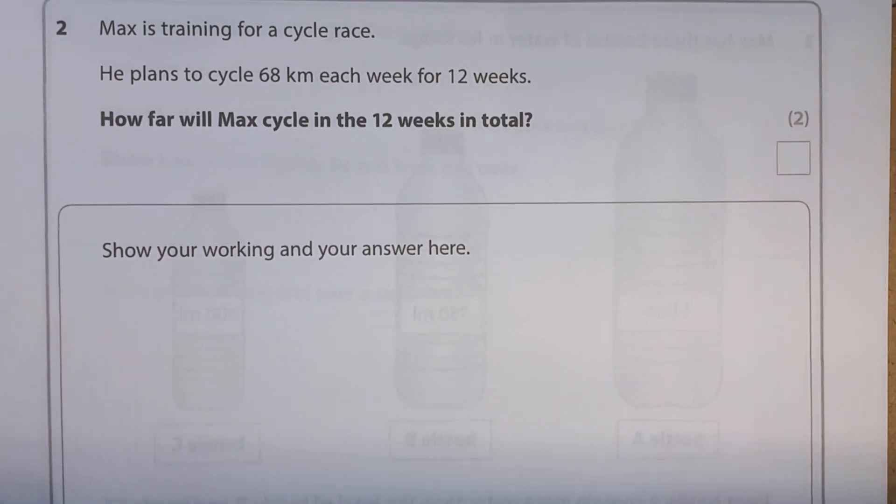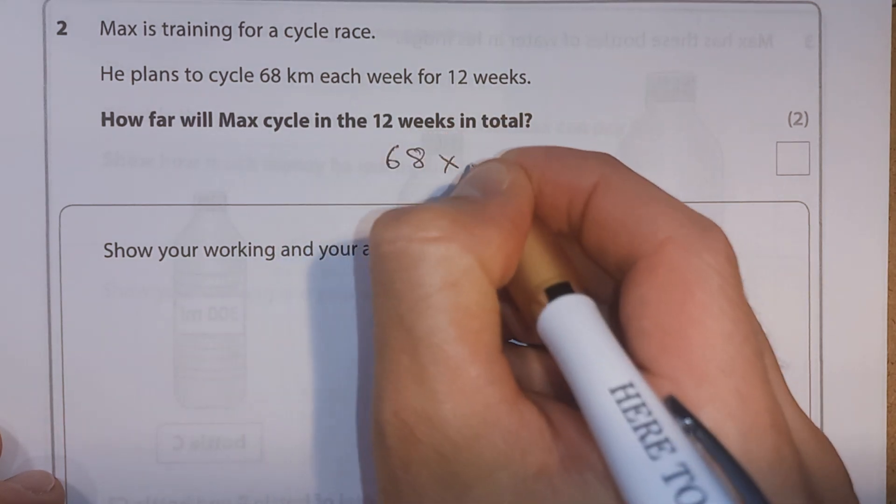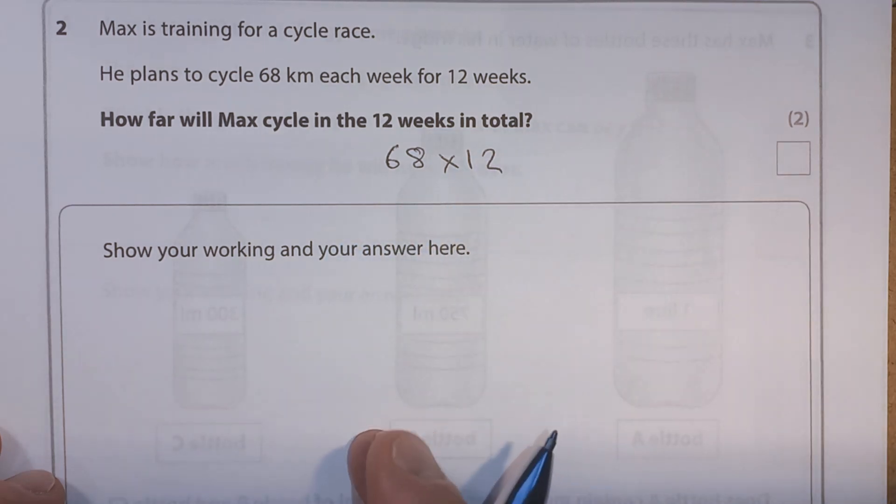Okay, question 2. Max is training for a cycle race. He plans to cycle 68 kilometres each week for 12 weeks. How far will Max cycle in the 12 weeks in total? So what we want is 68 times 12, because there's 12 of them.